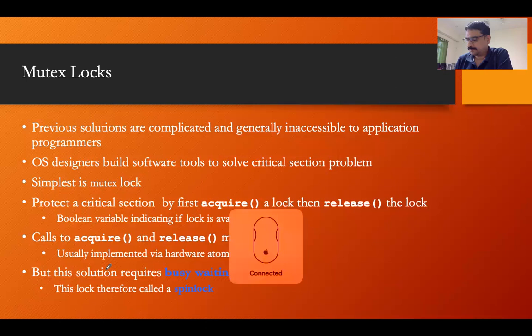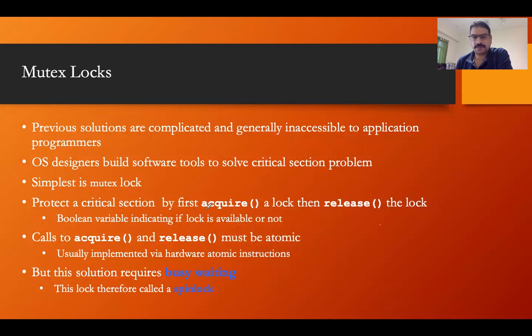This particular lock comes into the category of a boolean lock, meaning it has only two values: zero or one. When a process is calling the acquire function, the boolean value becomes zero (false), and when we are releasing the lock, the value becomes one (true). One indicates that the critical section is free; zero indicates that the critical section is busy, meaning some other process has already occupied it.